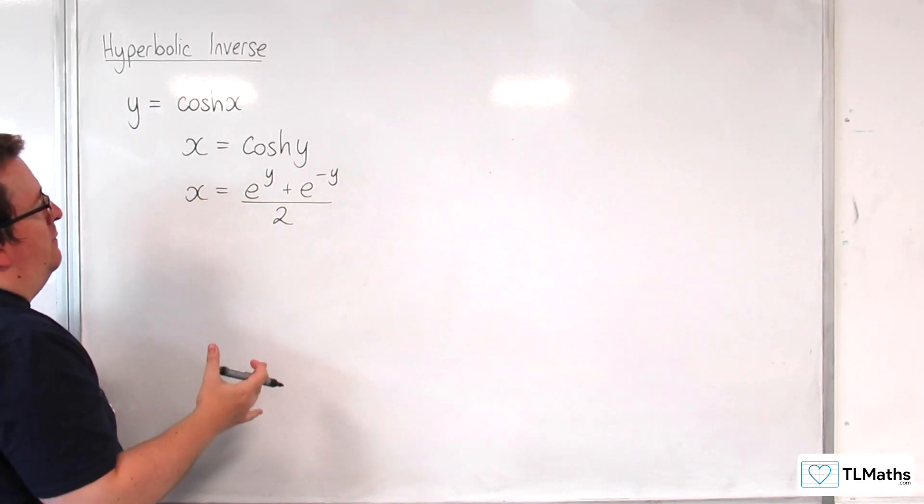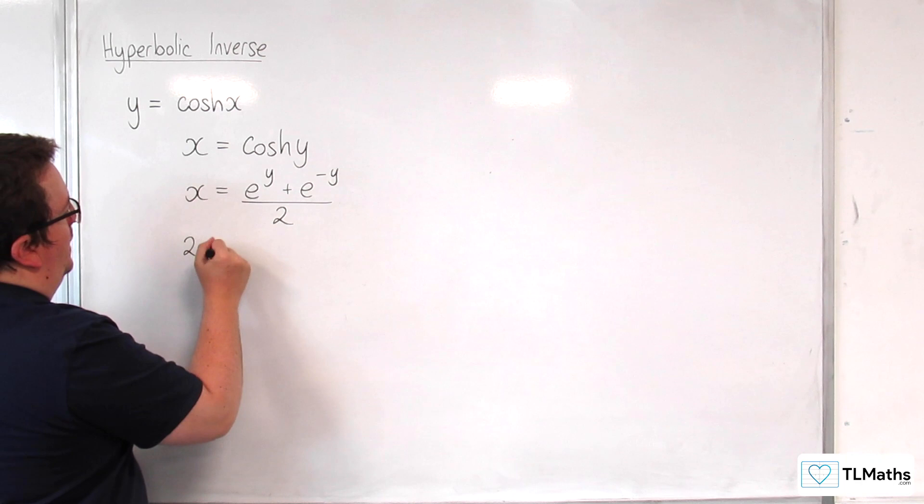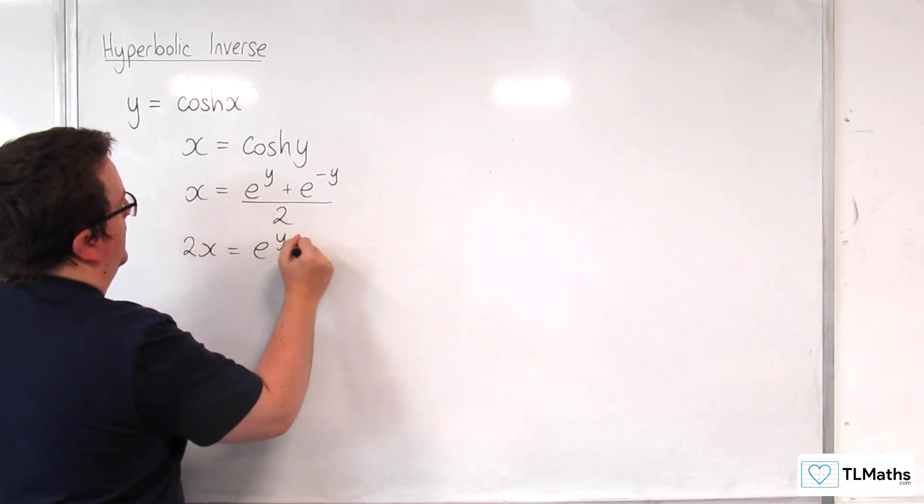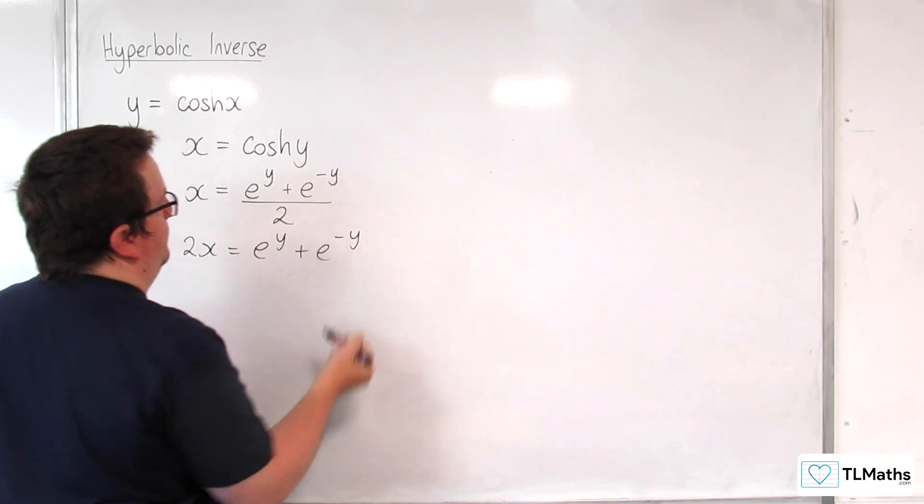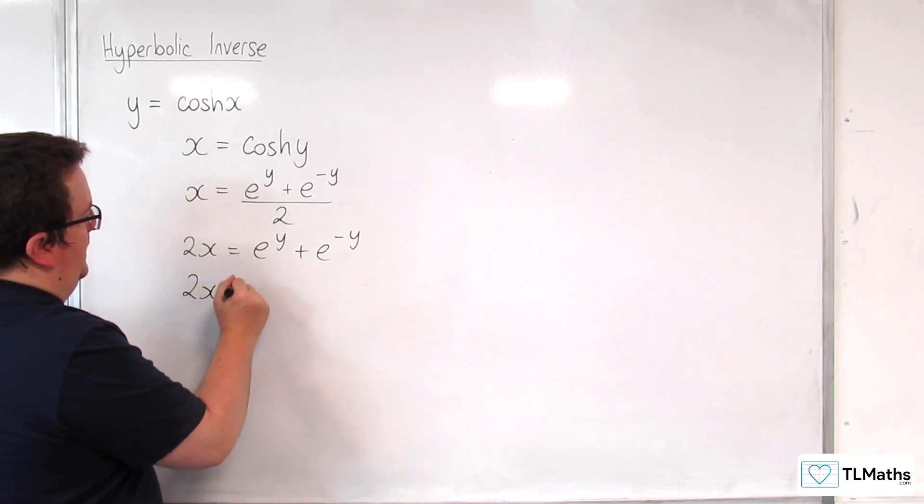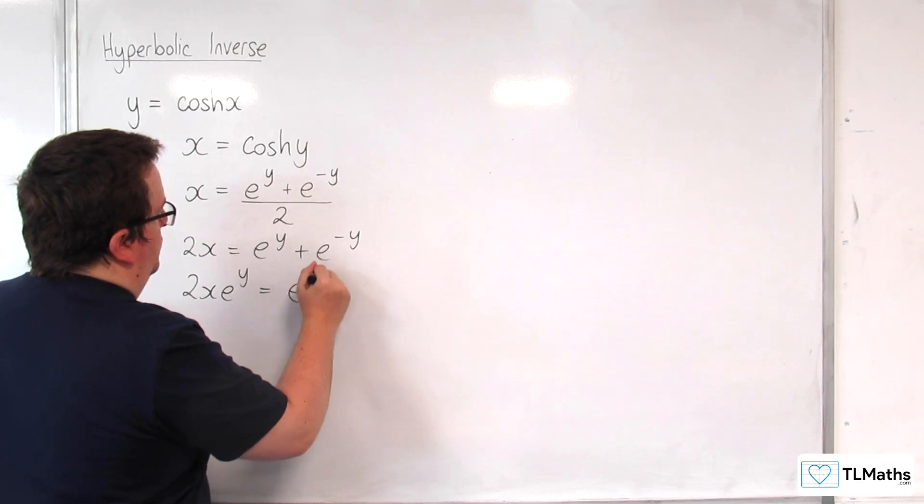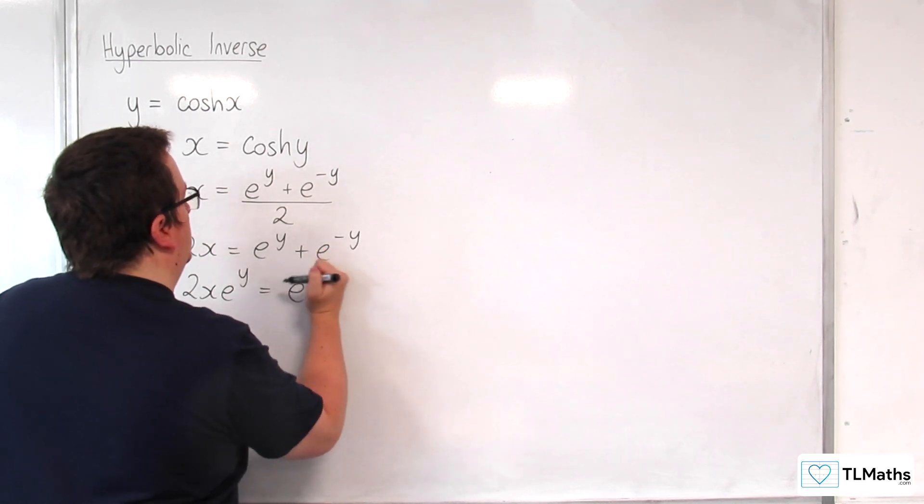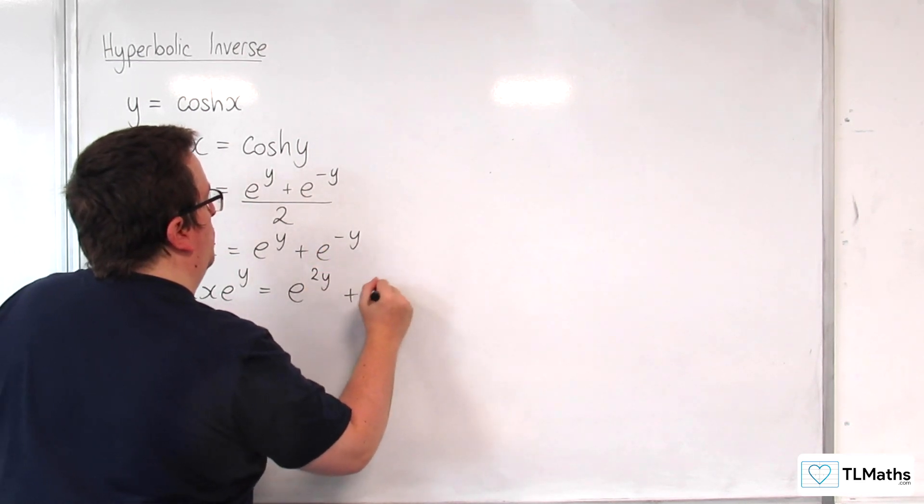So I'm going to multiply up by 2. So 2x is equal to e to the y plus e to the minus y. I'm going to multiply through by e to the y. So 2x e to the y is equal to e to the 2y, rather, plus 1.